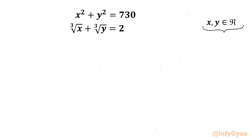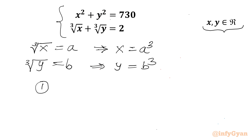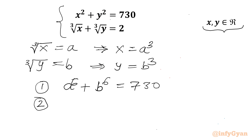Let's get started by considering our substitution. I will consider cube root of x equal to a and cube root of y equal to b. So from the first equation I can write x equal to a cubed, and from the second one y equal to b cubed. So our system of equations will change: the first equation becomes a⁶ plus b⁶ equal to 730, and the second equation becomes a plus b equal to 2.